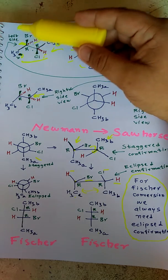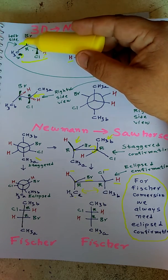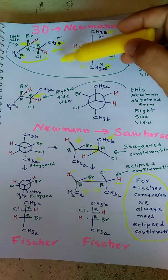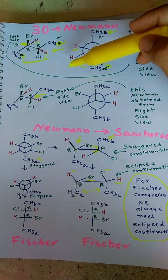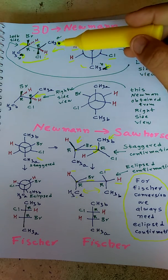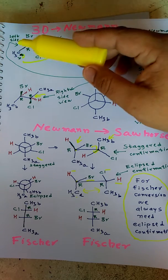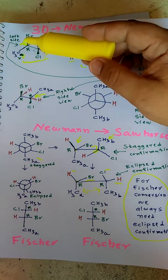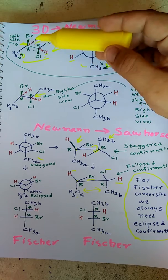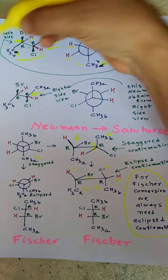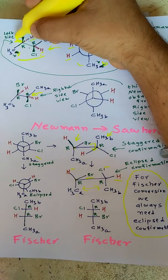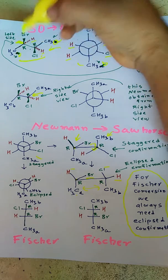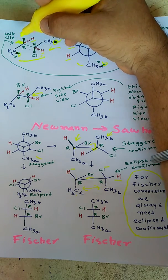What we have to do first is we can view this molecule from the left side or right side, and we get the same result. I will first see this molecule from the left side. When I see this molecule from the left side, I am seeing it from this center carbon.